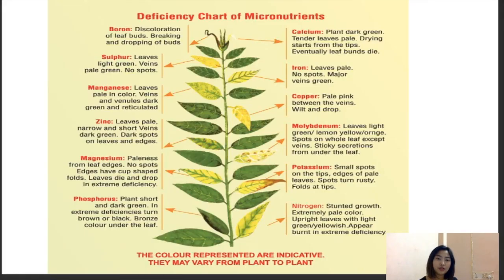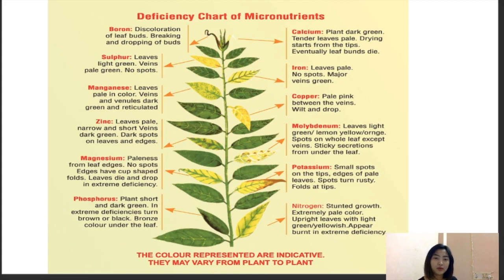Here is a diagrammatic representation of a plant showing where macro and micronutrient deficiency symptoms appear. Starting from the left side: Boron deficiency causes discoloration of leaf buds and breaking and dropping of buds. Sulfur deficiency shows light green or pale green veins with chlorosis symptoms but no spots — leaves turn light green or yellow.